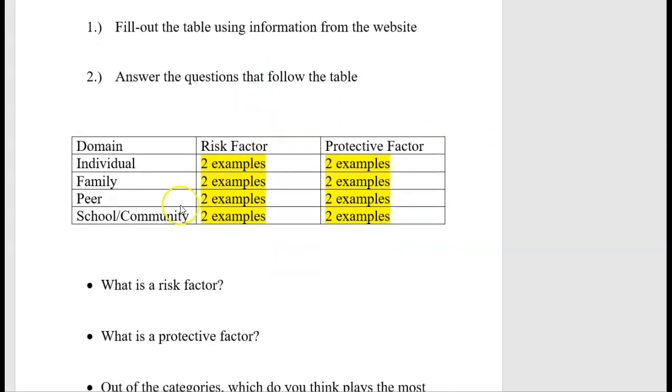Answer the questions that follow the table. We have risk factors and protective factors that are involved in juveniles who may get caught up in crime or have to go to some type of juvenile justice facility. You have individual, family, peer, and school or community. Give me two examples of the risk factor and two examples of the protective factor.